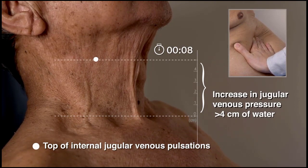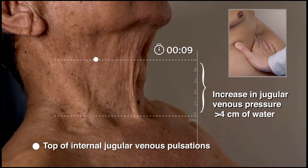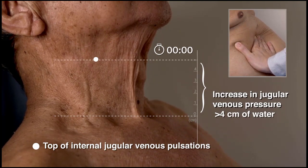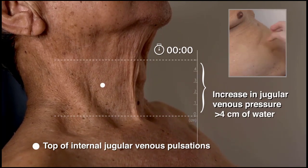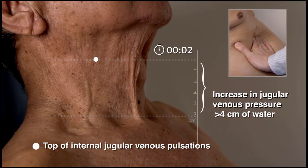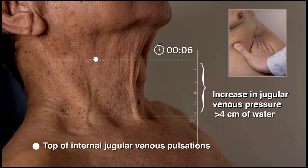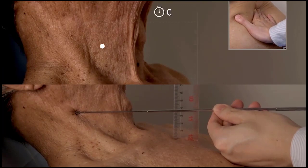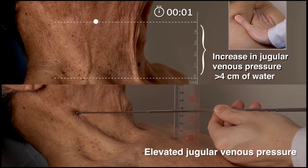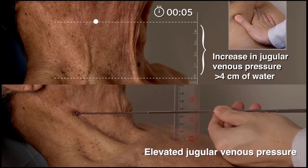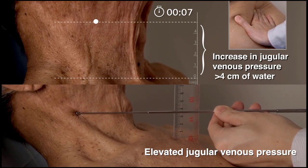An abnormal abdominal jugular reflux test result indicates that the right atrial pressure is elevated. Such a finding in the patient with dyspnea indicates heart failure on the right side. A normal abdominal jugular reflux test result decreases the probability that the patient has elevated filling pressure on the right side of the heart. When the abdominal jugular reflux test and jugular venous pressure are combined, they are 80% sensitive and 81% specific for the detection of elevated right atrial pressure.